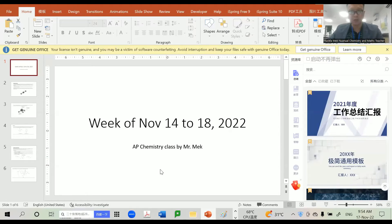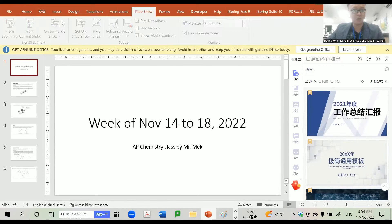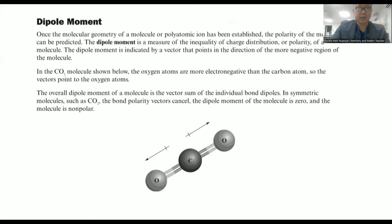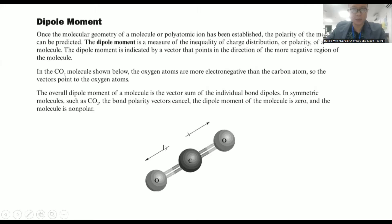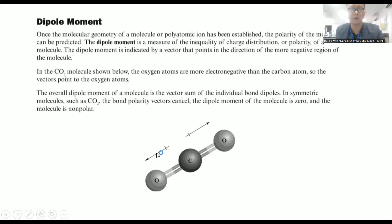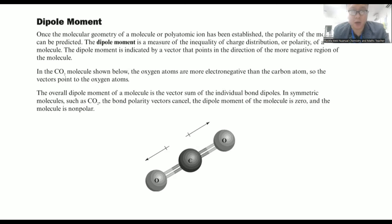We will start talking about what a dipole moment is first. A dipole moment is when you are doing these sort of arrows — you're basically going to use these dipole moments, which are showing you a difference of electronegativity. If you remember, we had calculated delta EN before — the difference in two atoms' electronegativity values. We had done that before in a different lesson.